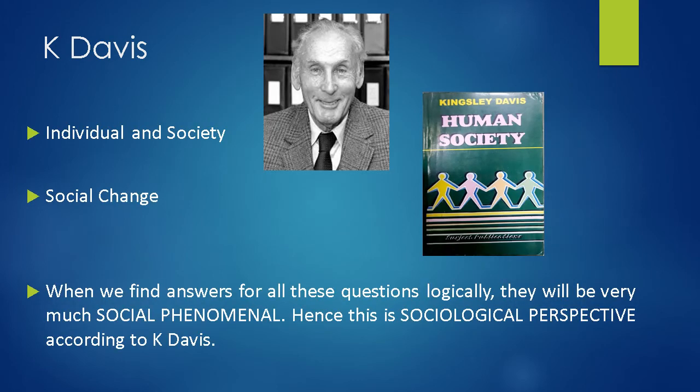Then comes another aspect: individual and society. There is an inseparable relationship between individual and society. How society is affecting the development of personality of an individual, and why there is diversity of individuals in the society — all these aspects we have to understand. We need to go for different types of theories which will be applicable to understanding society and the individual.